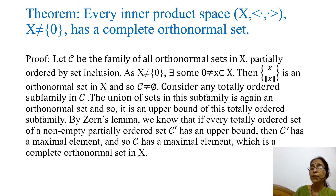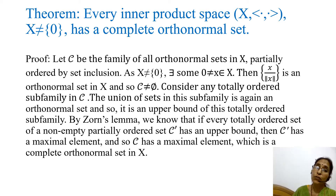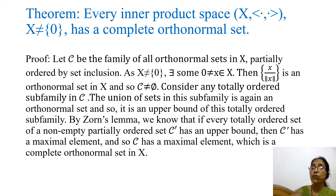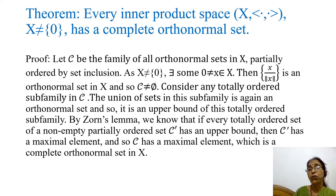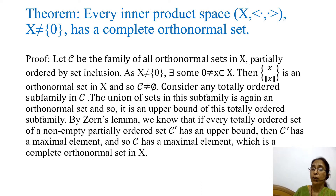Let us prove a theorem which states that every inner product space X, which is a non-zero space, has a complete orthonormal set. This means there always exists a complete orthonormal set in a non-zero inner product space. Let us prove this theorem. Let C be the family of all orthonormal sets in X, partially ordered by set inclusion. So C is a partially ordered set.